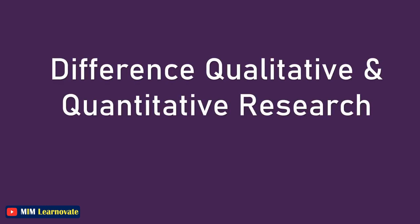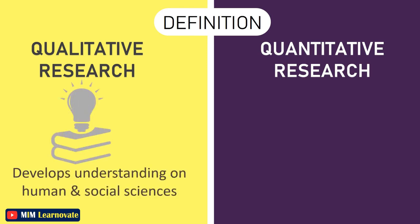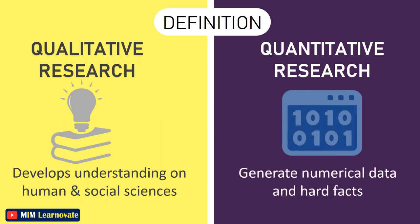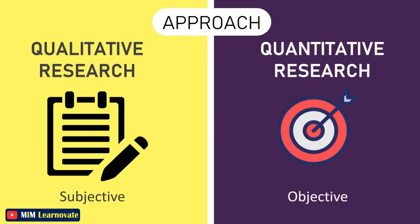What is the difference between qualitative and quantitative research? Qualitative research is a method of inquiry that develops understanding of human and social sciences to find the way people think and feel. Whereas quantitative research is used to generate numerical data and hard facts by employing statistical, logical, and mathematical techniques. Regarding approach: qualitative research follows a subjective approach as the researcher is intimately involved, while quantitative research is objective as the researcher is uninvolved and attempts to precisely observe and analyze the topic.